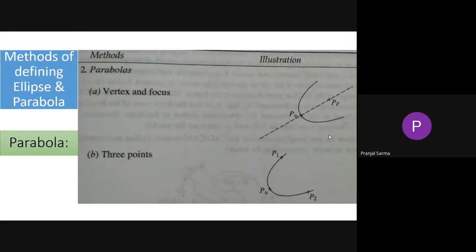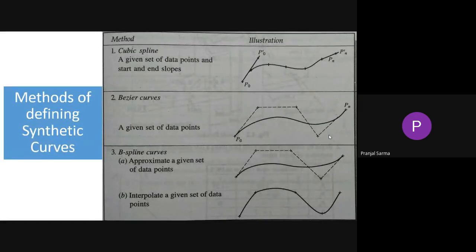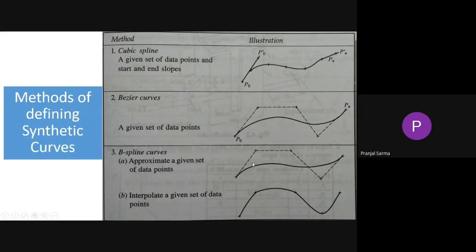Similarly, if a line is already available, tangential to that particular line you can generate circles if you know the given radius. There are also different other ways to define ellipses, parabolas, etc. From your engineering graphics knowledge, you already know how to draw ellipses, parabolas, etc. — those are the same logics used for defining them. So right now what we have covered is different ways of generating points, line data, and related entities.